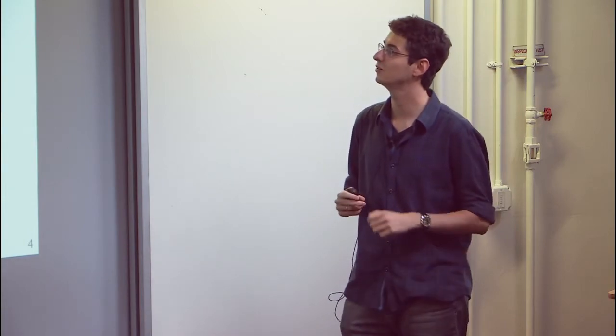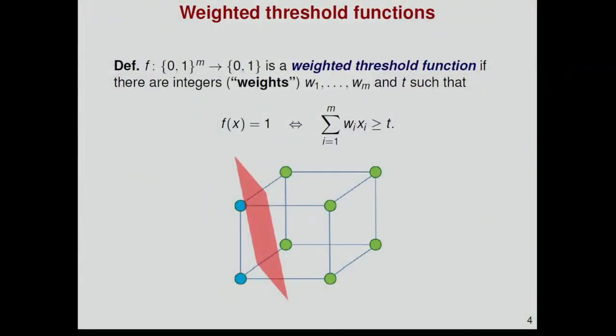Recall that a Boolean function f is a weighted threshold function if there are integer weights w1 to wm and a threshold t such that f of x is 1 if and only if this weighted sum is at least t. Here is a picture.